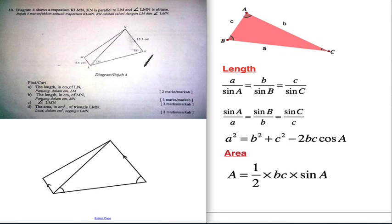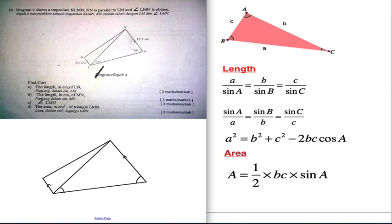I think this is a question for solution of triangle. The diagram shows a trapezium KLMN — these two lines are parallel, so we call it a trapezium. It gives you that KN is parallel to LM, and then it tells you that angle LMN is obtuse.